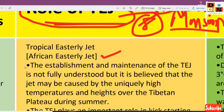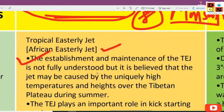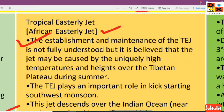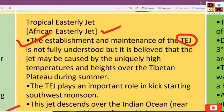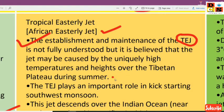The establishment and maintenance of the Tropical Easterly Jet is not fully understood, but it is believed that the jet may be caused by the unusually high temperatures over the Tibetan Plateau during summer.